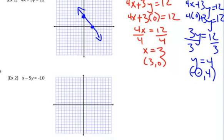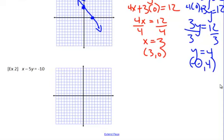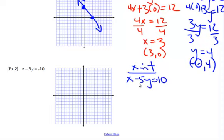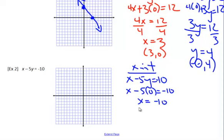Same thing for number 2. For the x-intercept, let's make y zero. So we're going to use x minus 5y equals negative 10. It's going to be x minus 5 times zero equals negative 10. And x minus zero is just x, so x equals negative 10. We plugged zero in for y, so the point is (negative 10, 0).